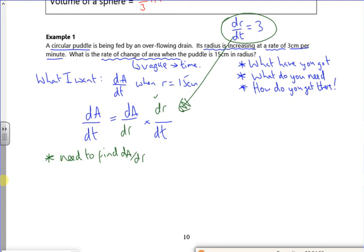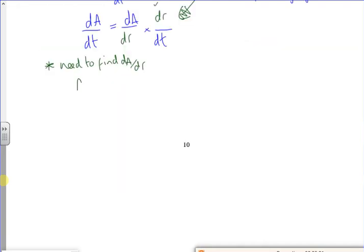What I need to find now is dA/dr. So remember what the equation is. It's got to be an A with an equals and r's on the right. It's a circular puddle. So using that information, I must be using A = πr². So dA/dr is 2πr. There.